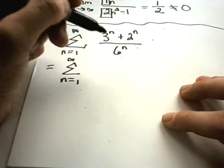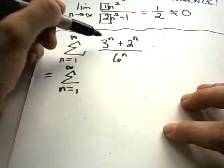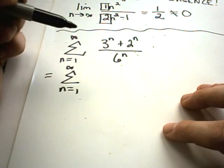I think this one got cut off here a little bit, so let's restart it. I've got 3 to the n plus 2 to the n over 6 to the n.